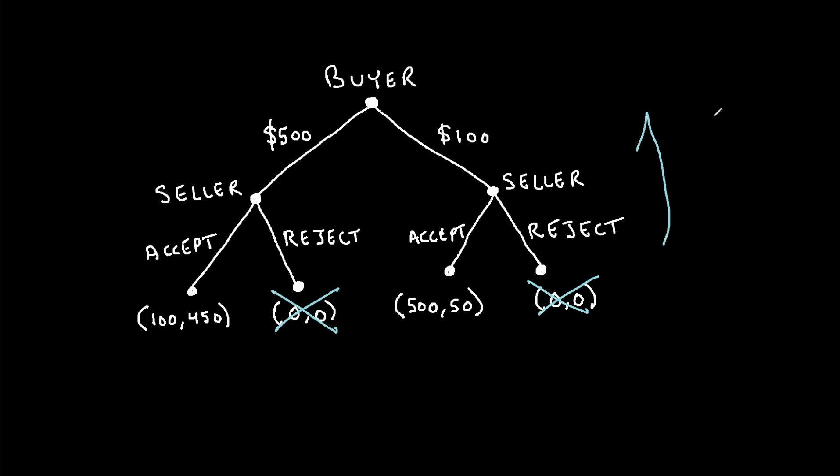Okay, now what we'll do is we'll work our way up the game tree. So we'll move to the next node, which would be this node right here. At this node, the buyer has a decision. Should they offer $500 and ultimately receive the outcome of $100 as their payoff? Or should they make the offer of $100 and ultimately receive the payoff of $500?